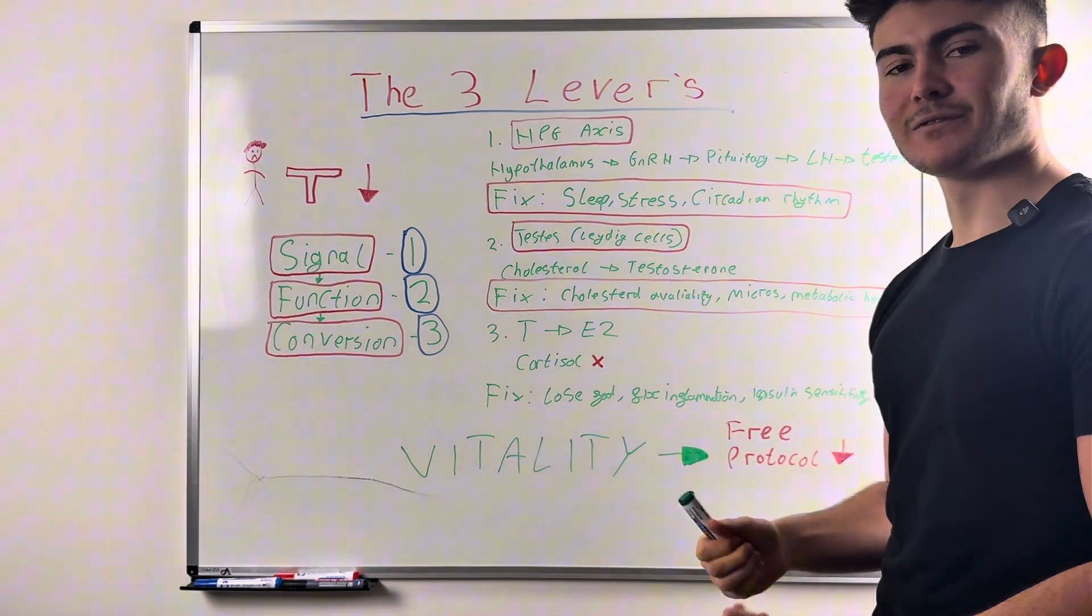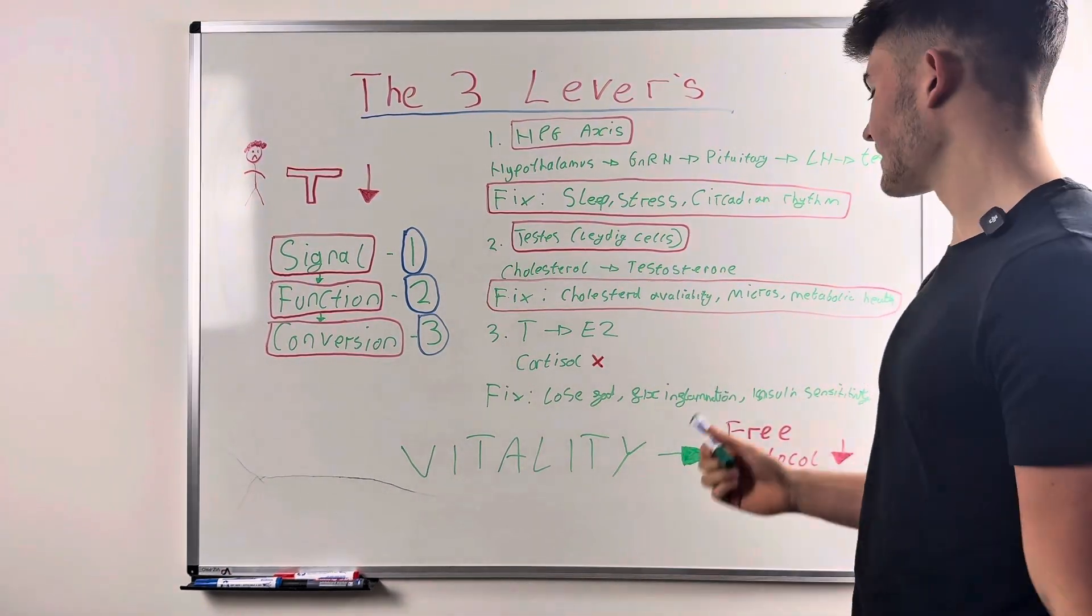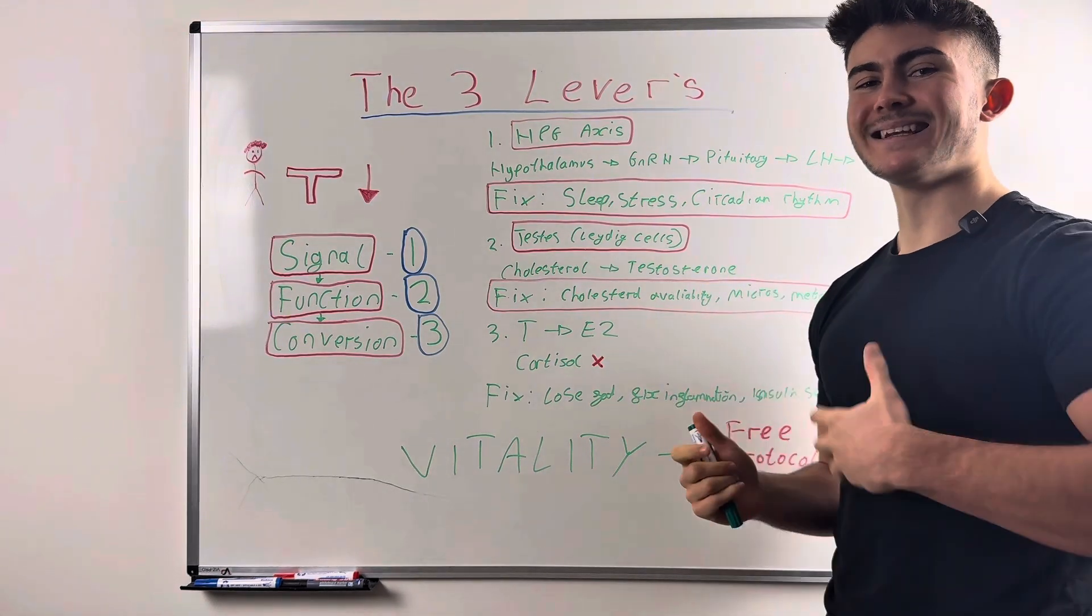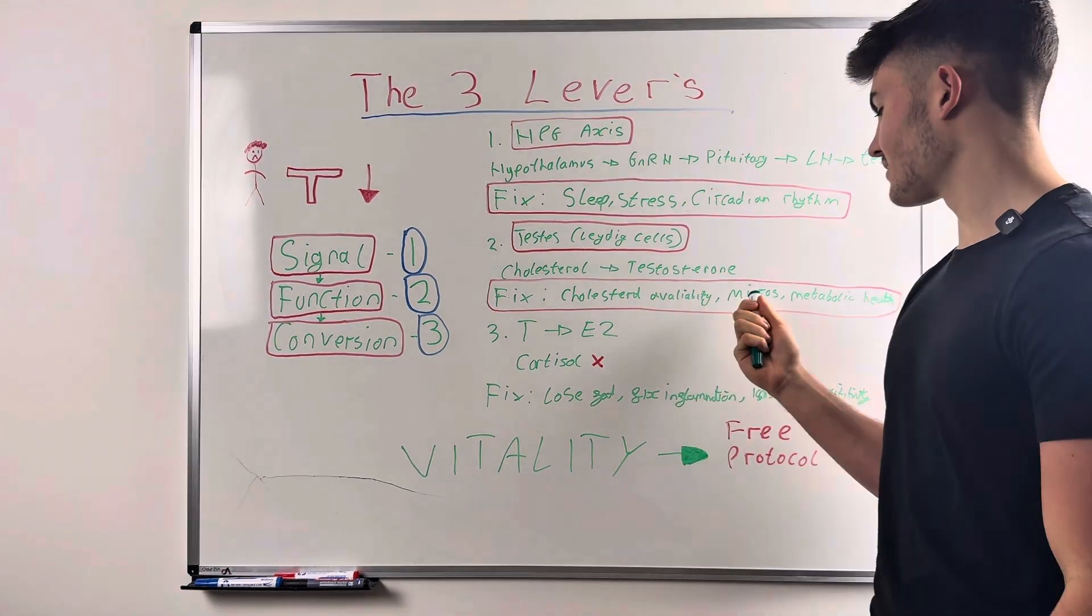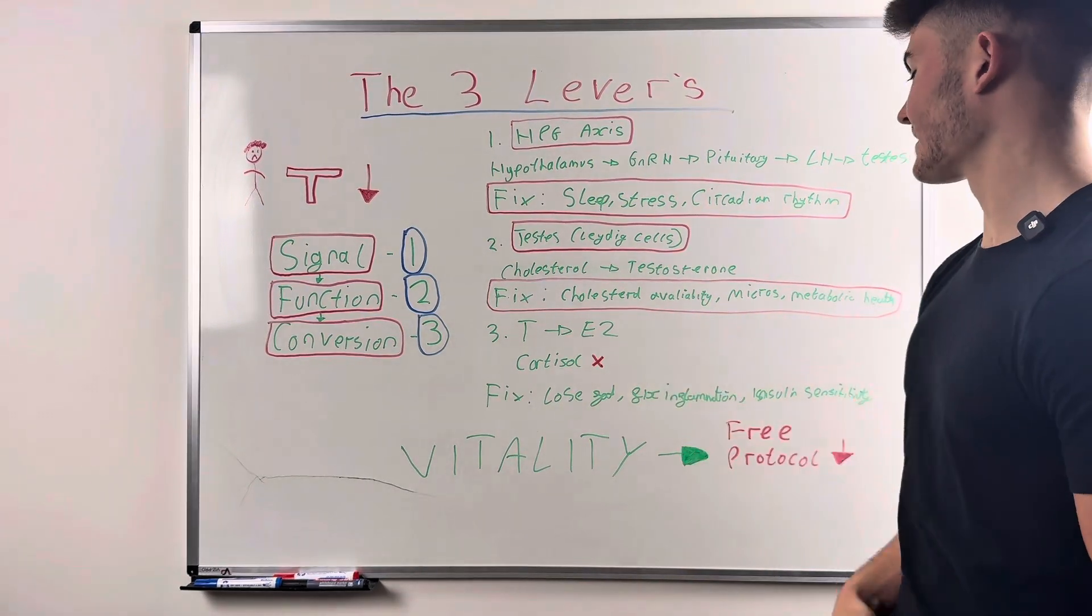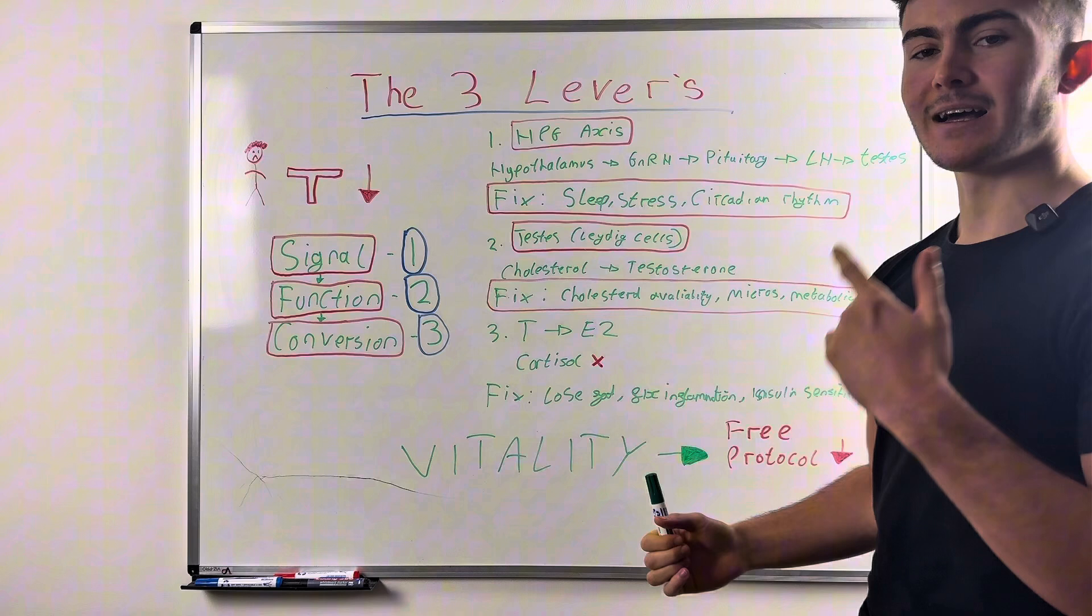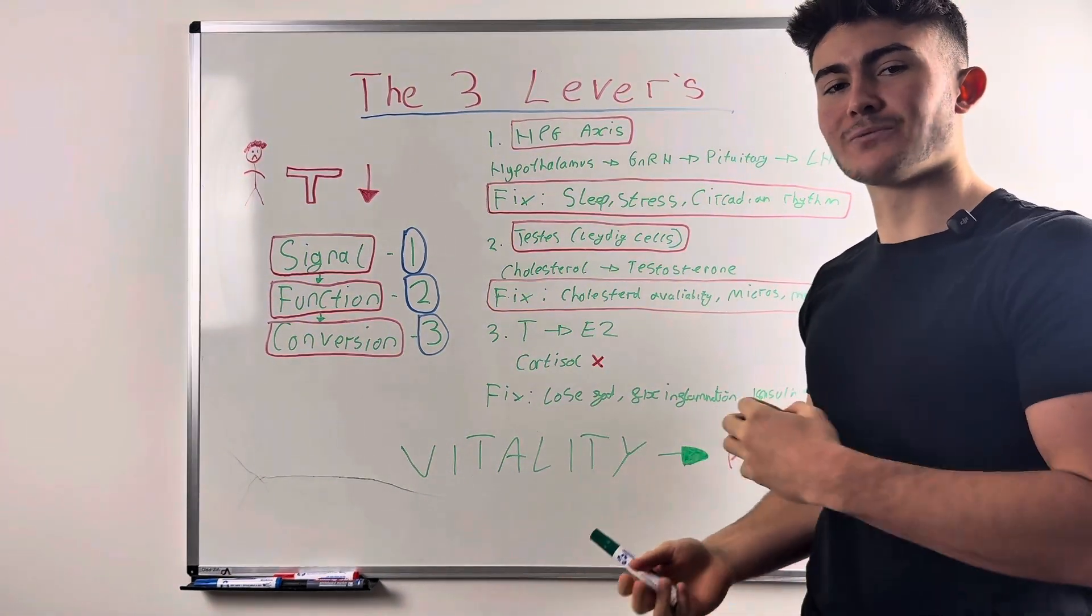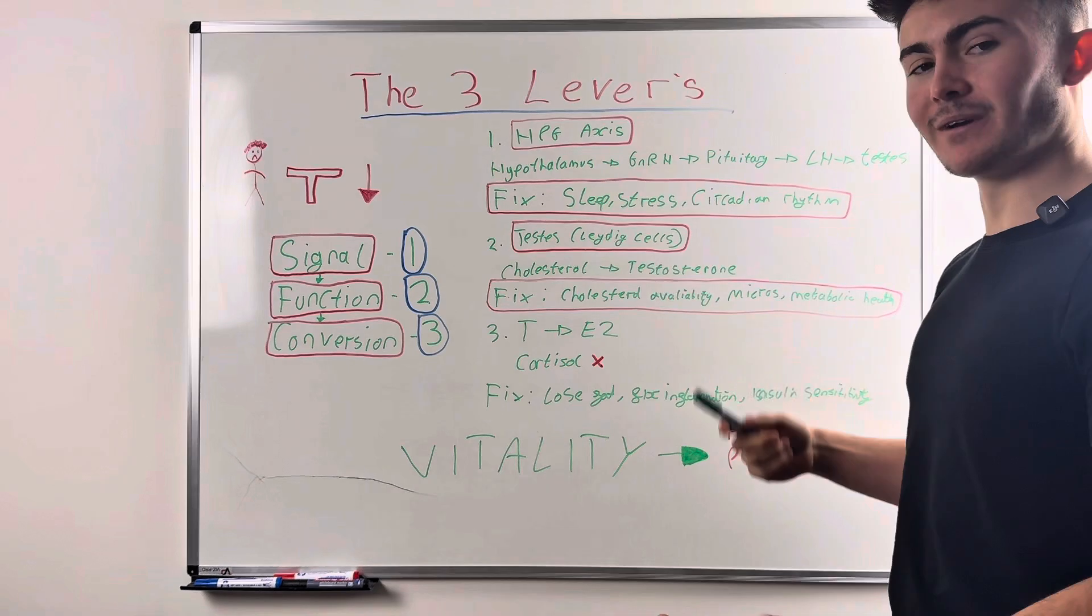Micronutrients, these are directly involved in the process of creating hormones, steroidogenesis. For example, vitamin A, selenium, zinc, all of these are needed for the synthesis of testosterone. So if you're deficient, guess what's going to happen? You're not going to function properly. Your balls aren't going to function properly in making testosterone. That's why foods like eggs, liver, beef, they all contain all these micronutrients you need. That's why you should eat them in large amounts if you want to get high testosterone.